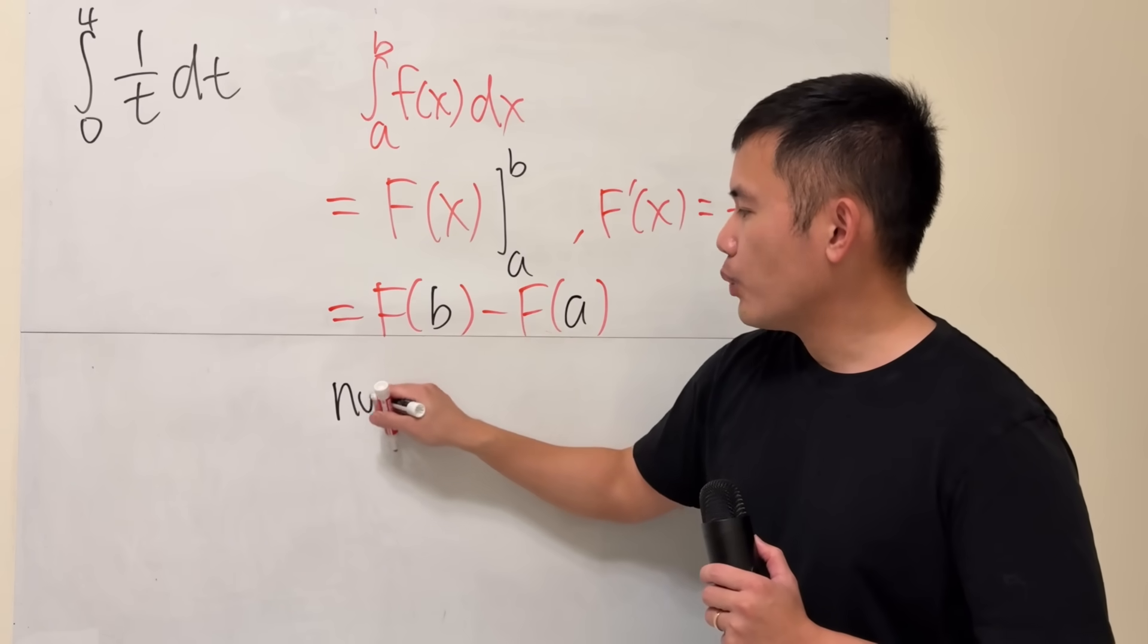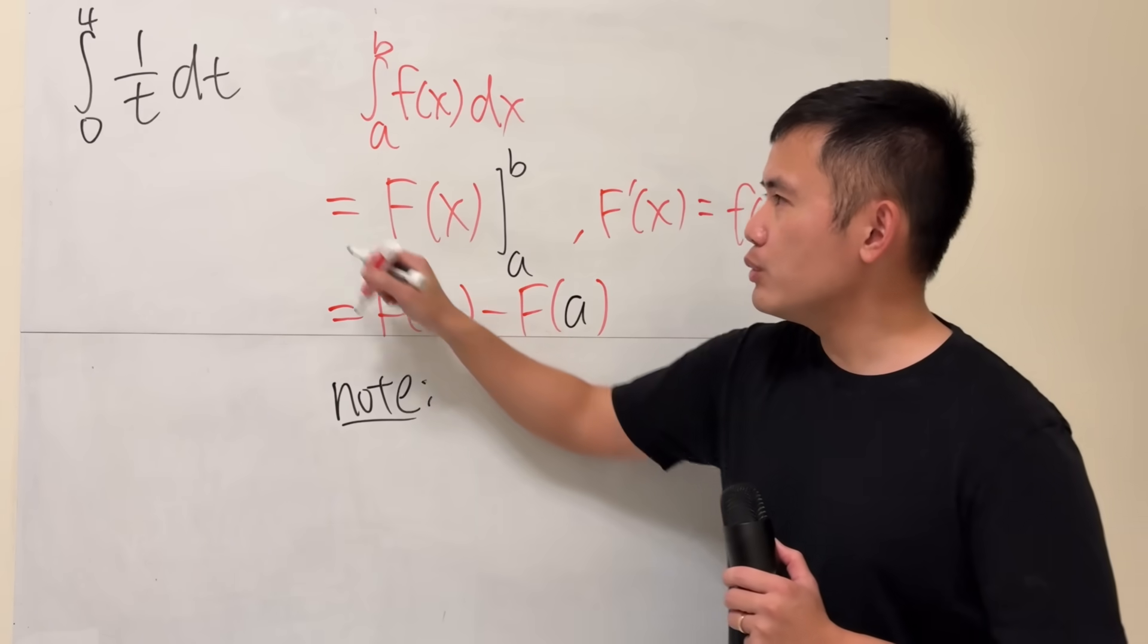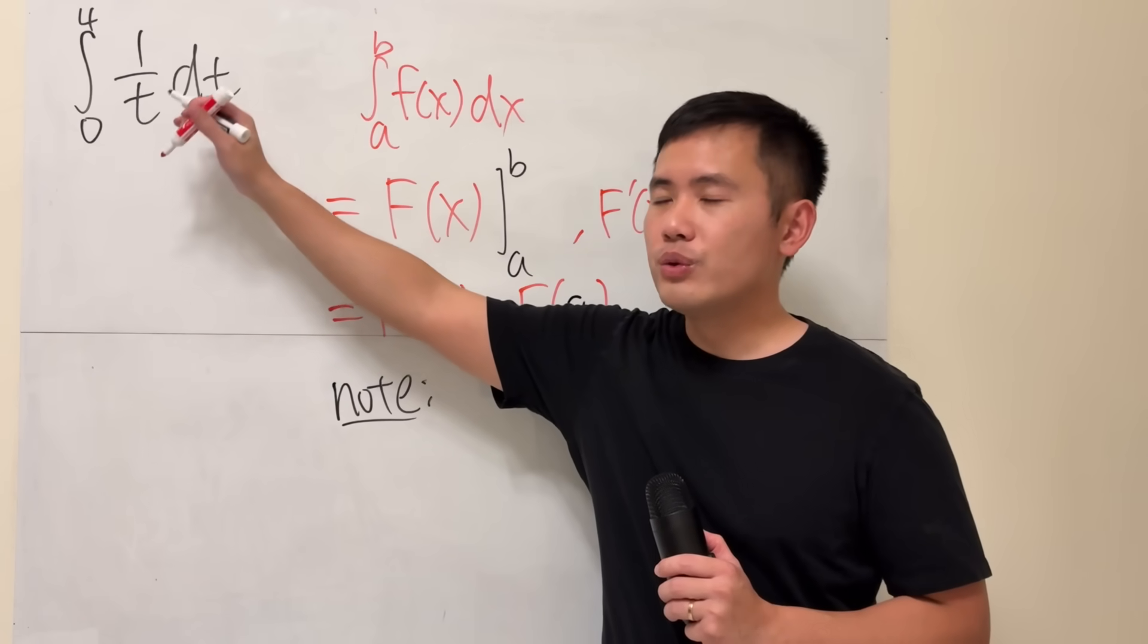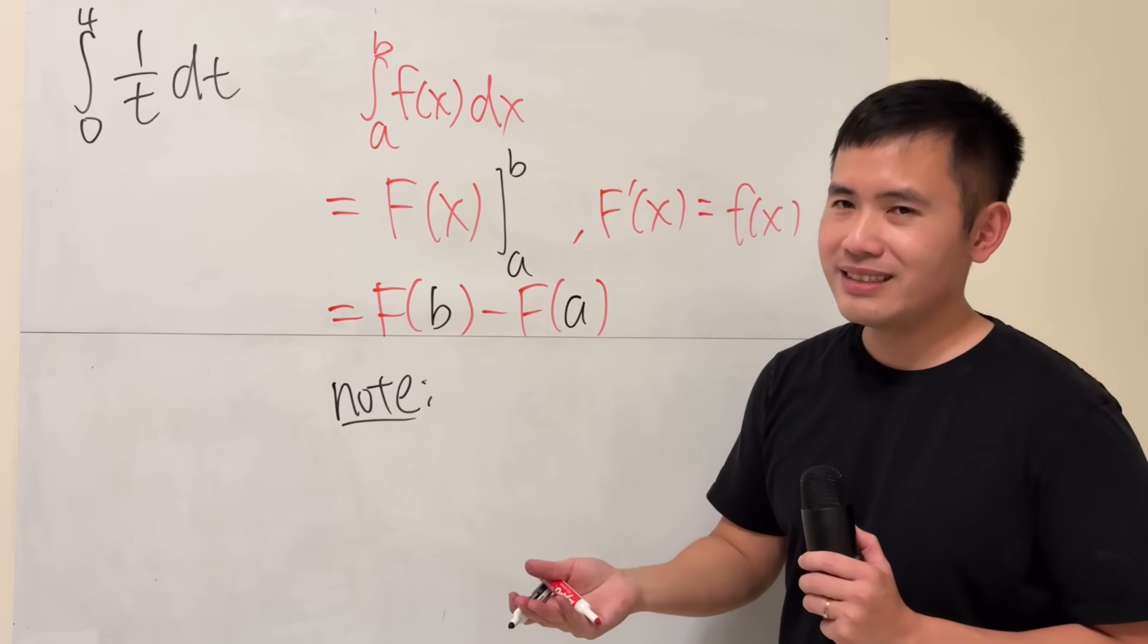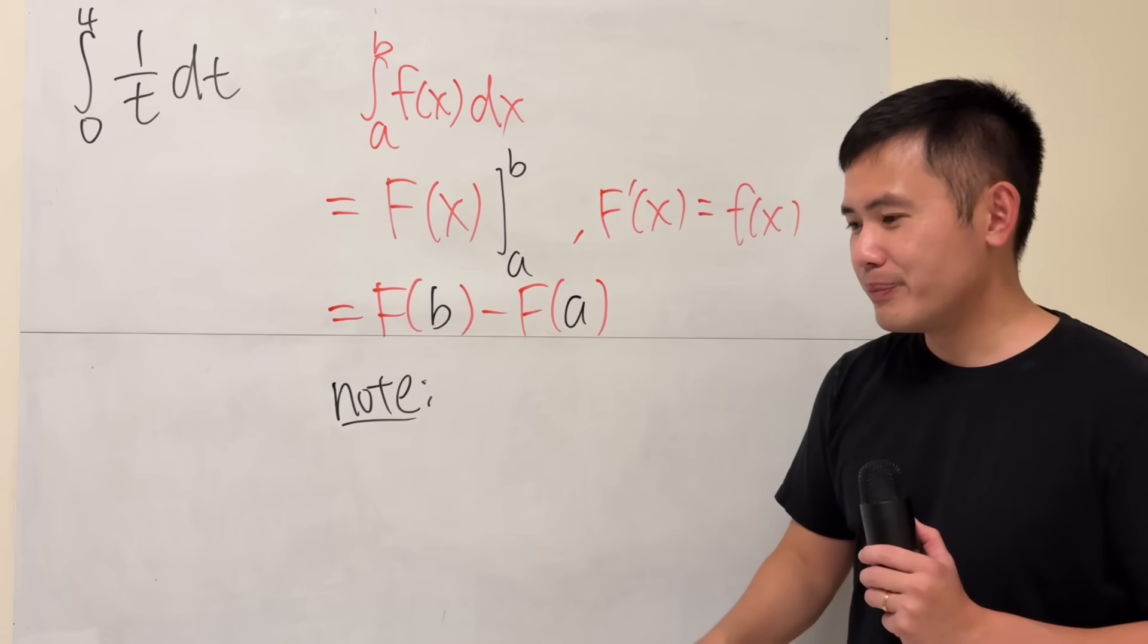First though, 1 over t, do not use the reverse power rule for that. Do not write it as t to the negative 1 and then try to add 1, because otherwise you get 0, and then divide it by 0, you can't define. No good.